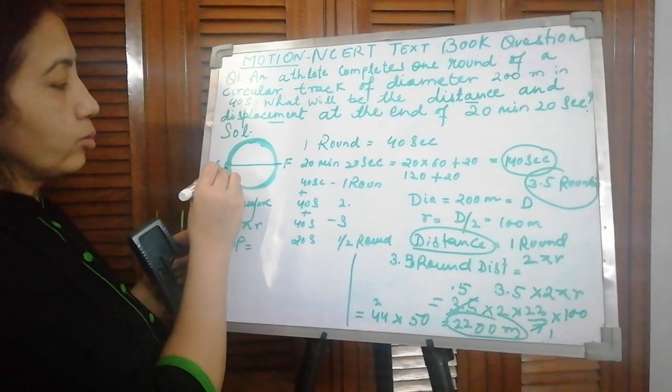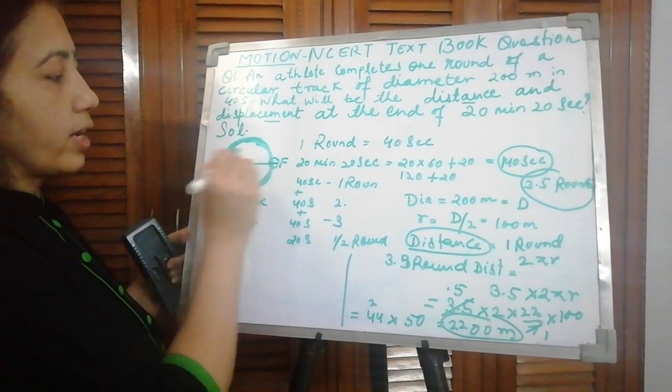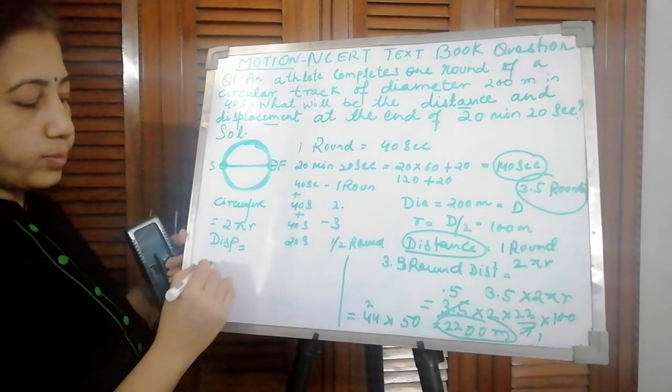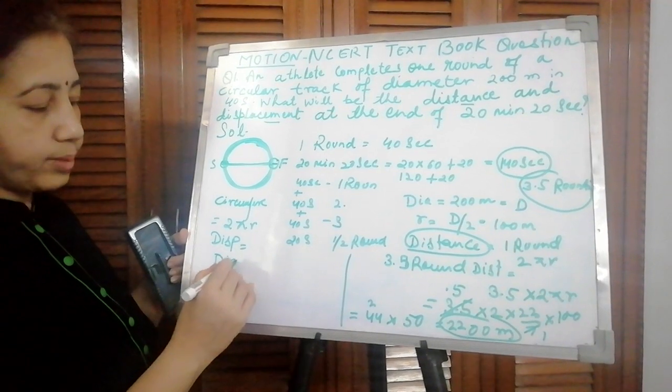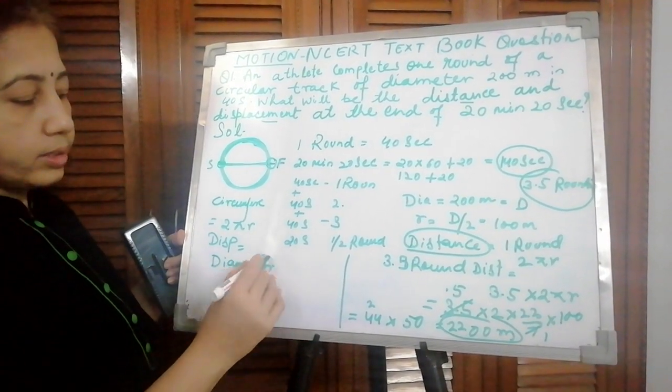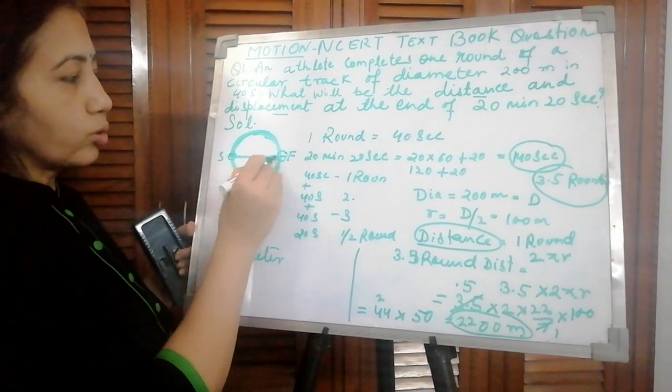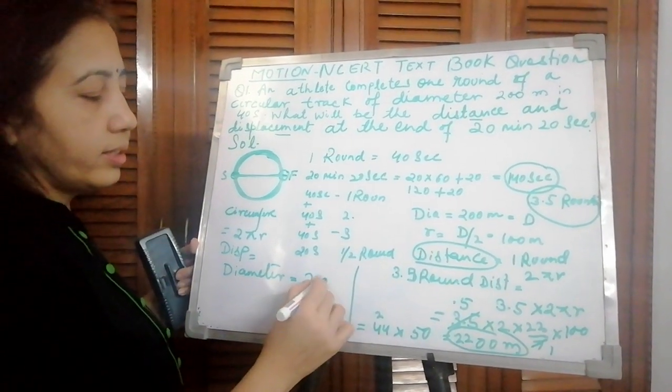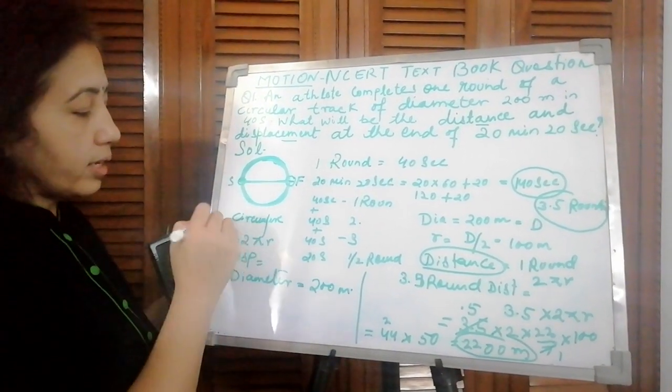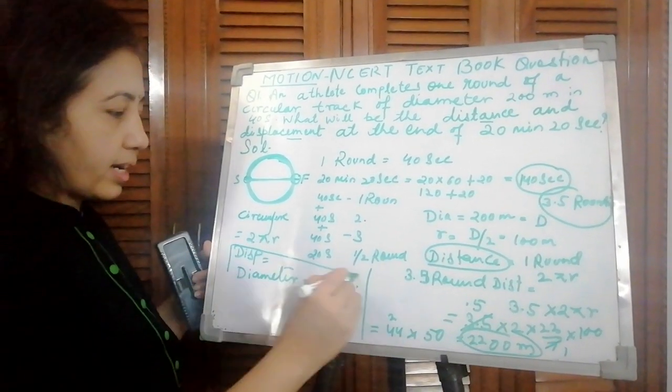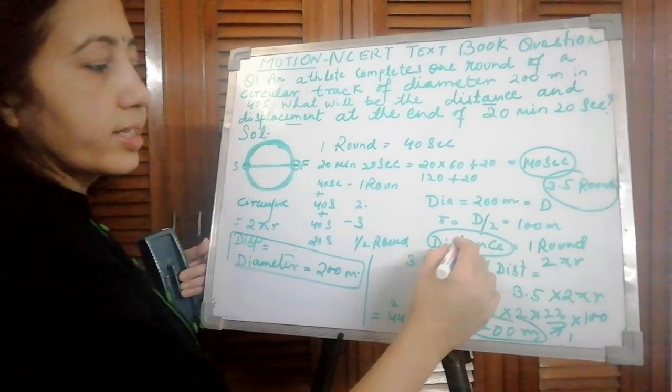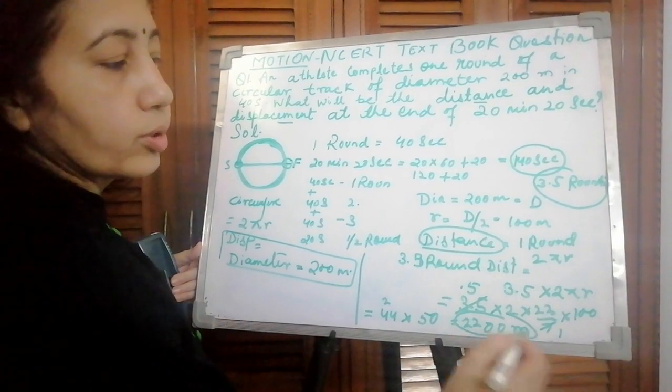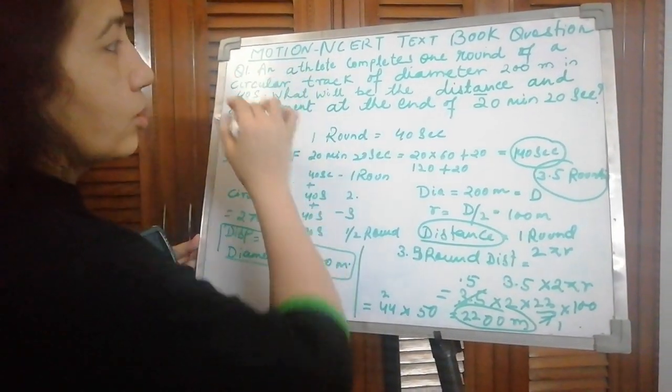He started from this place. Finally he reached here. So what is his shortest distance? What will be displacement? Shortest distance is the diameter. Displacement equals diameter, which is 200 meters. So he covered displacement of 200 meters and distance of 2200 meters.